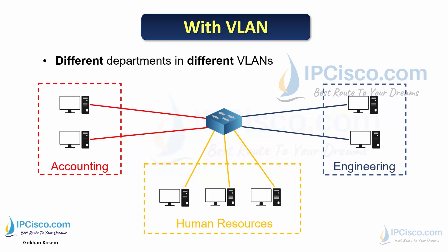With this scenario, we can assign different departments of a company to different virtual LANs, separating the traffic of different departments. As shown on screen, there are accounting, human resources, and engineering departments, each with its own virtual LAN.